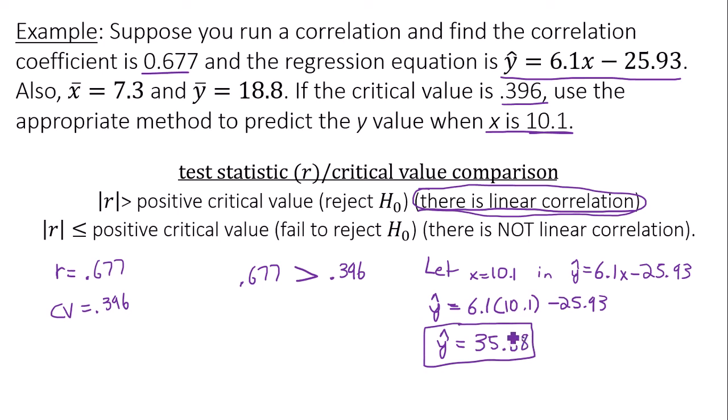So this is an example of making predictions. We can use the regression equation because we showed there is linear correlation. When there is not linear correlation, you would have to use y-bar, the average of the y values, as your predicted y value. That's all I have for you today. Thanks for watching.